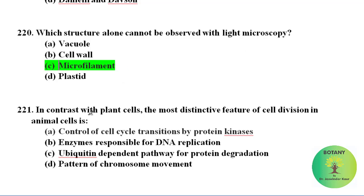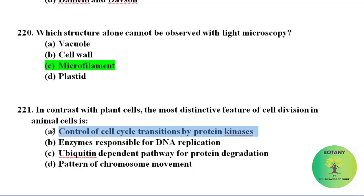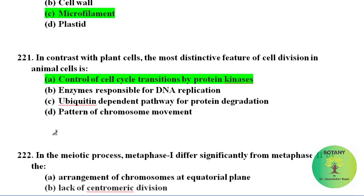In contrast with plant cells, the most distinctive feature of cell division in animal cells is the control of cell cycle transitions by protein kinases, which are present only in animal cells and absent in plant cells.